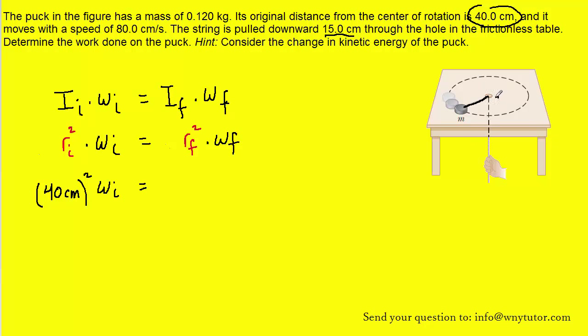Hopefully it's understandable that as the string gets pulled downward by 15 centimeters, then this length of string right here will also shrink by 15 centimeters. Recall that its original length from the puck to the center was 40, and if we pull down on the string, and that causes that string to shrink by 15 centimeters, that means that the final radius is going to be 25 centimeters.